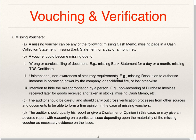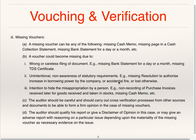Another reason is unintentional non-awareness of statutory requirement — for example, a missing resolution authorizing an increase in borrowing power by the company, or loss due to accidental fire. If the borrowing power is increased and a resolution is passed, it is required by law to preserve it. But if people are unaware of this requirement, it will not get filed properly.